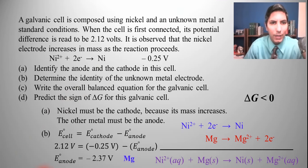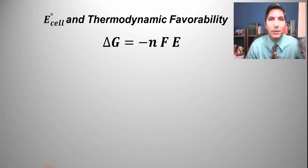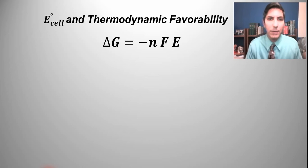Now, when we talk about thermodynamic favorability and galvanic cells, there's a very important equation that we're going to be making use of, and that's this equation right here. Delta G equals negative nFE. You need to be able to use that equation. Now, let's take a look at what every part of that equation actually means.